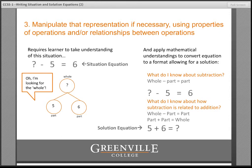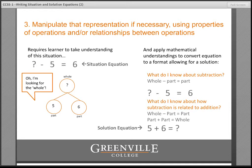If your students are familiar with number bonds, you can use that representation to help them see that what is known are two parts. Discussions about what that means lead to the question: how do you find a whole when you know the two parts? You join them. The number bond tool helps move beyond merely thinking in terms of sequential steps and lifts the relationships so students can examine them and see what is needed to solve the problem — which is to restate it as a solution equation: 5 + 6 = ?